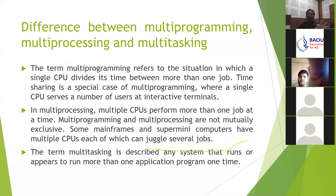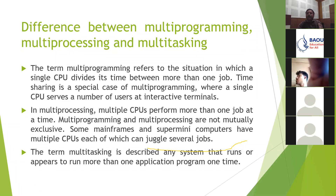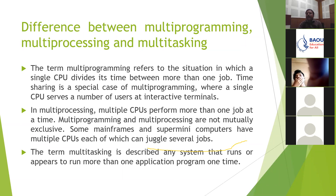You might come across three terms: multiprogramming, multiprocessing, and multitasking. They sound similar but are different. Multiprogramming refers to a situation where a single CPU divides its time between more than one job — single CPU, multiple programs. Multiprocessing means multiple CPUs perform more than one job at a time — multiple CPUs and multiple programs. Multitasking describes any system that runs or appears to run more than one application program at a time.